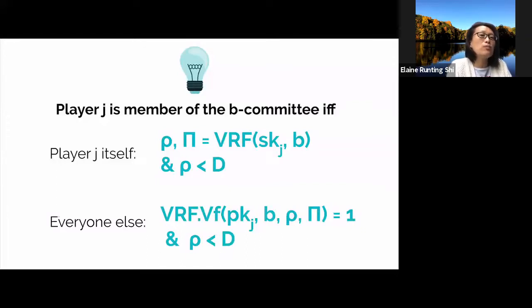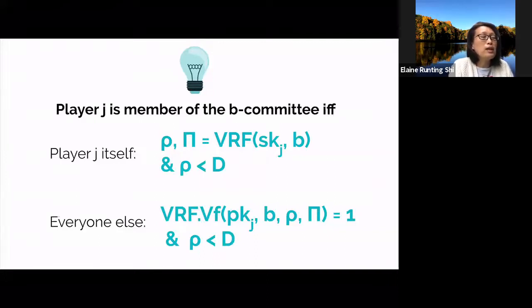When player j evaluates its own VRF, besides the evaluation outcome rho, it also obtains the proof denoted pi, and the proof basically attests to the correctness of the evaluation outcome. Everyone else now can use player j's public key and the proof pi to check if the purported evaluation outcome rho is correct. Therefore, everyone can check if player j is indeed a member of the b committee.